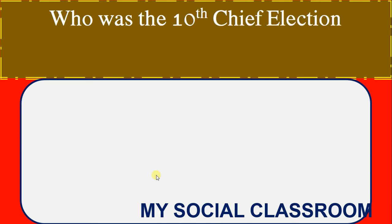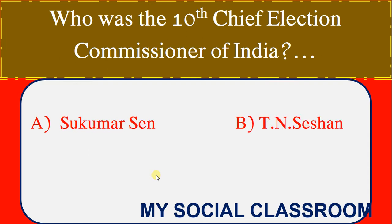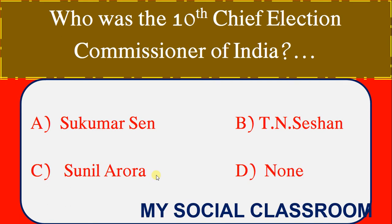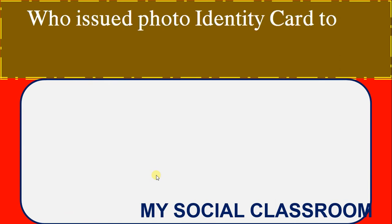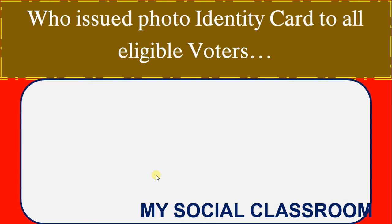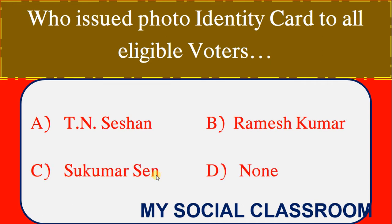Who was the 10th Chief Election Commissioner of India? Options: Sukumar Sen, TN Seshan. Correct Answer: TN Seshan. Who issued Photo Identity Cards to all eligible voters? Options: TN Seshan, Ramesh Kumar, Sukumar Sen, None. Correct Answer: TN Seshan.